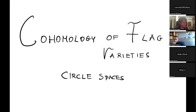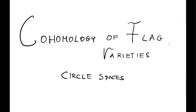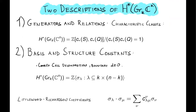I'm going to recall what's known about the cohomology of real flag varieties. There are two classical descriptions of the cohomology of complex Grassmannians. The first one is in terms of generators and relations: these are the characteristic classes of the topological bundles on the Grassmannian. The cohomology of the complex Grassmannian is generated by the Chern classes of the tautological and quotient bundle, and the relation is given by the Whitney sum formula.